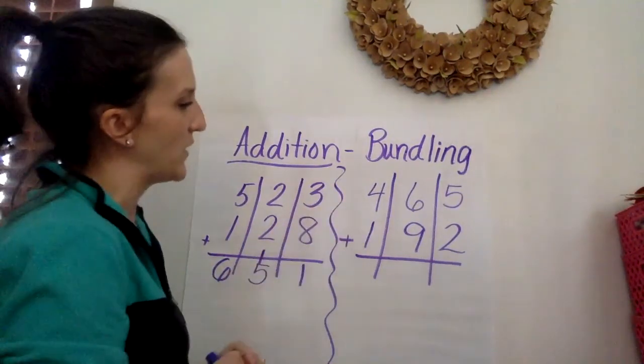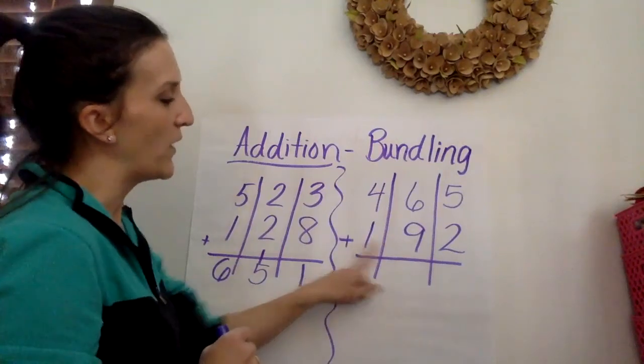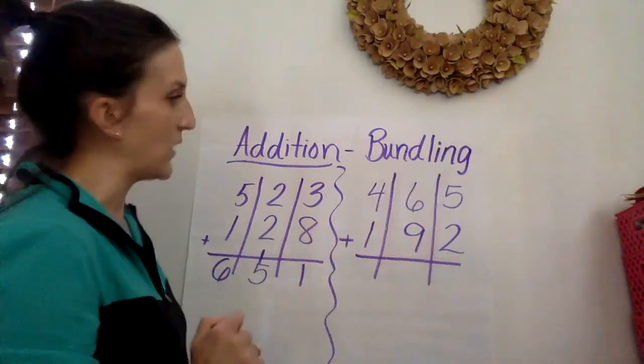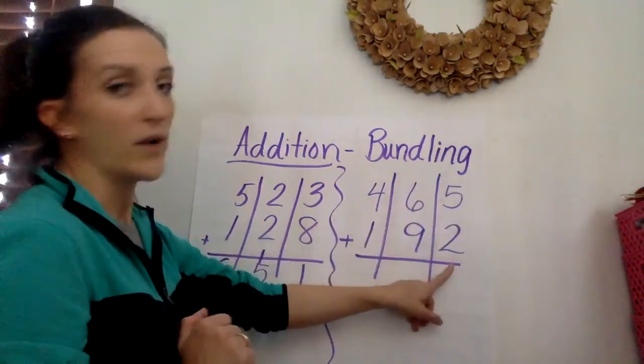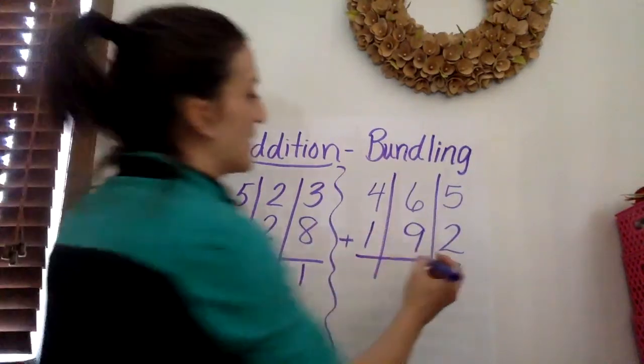All right in the next problem we're going to add 465 plus 192. Again we're stacking those problems vertically starting in the ones place. 5 plus 2 equals 7.